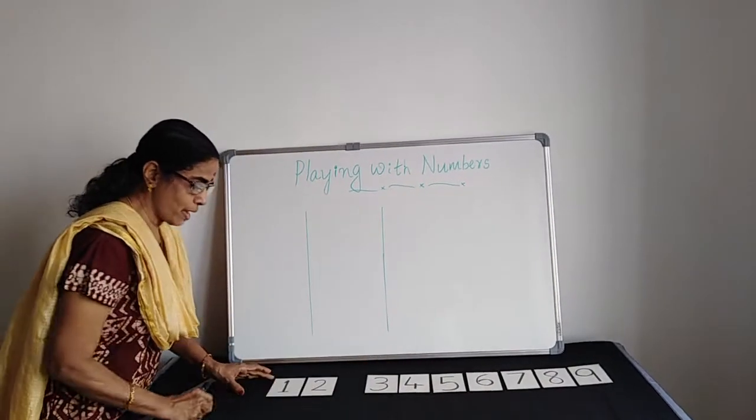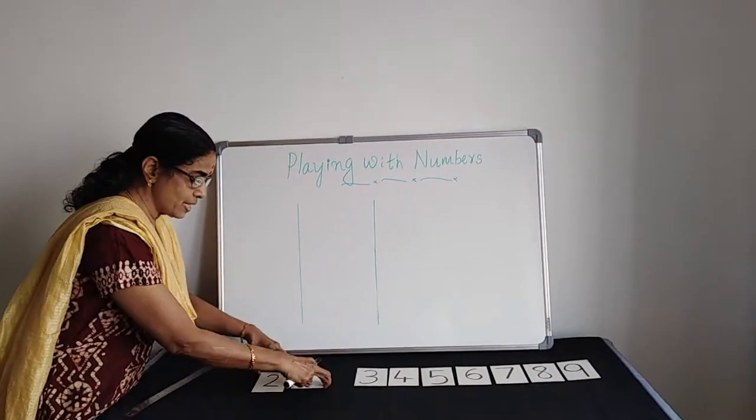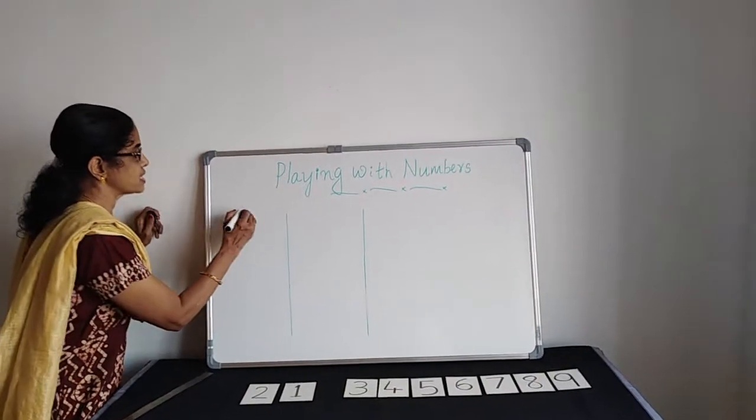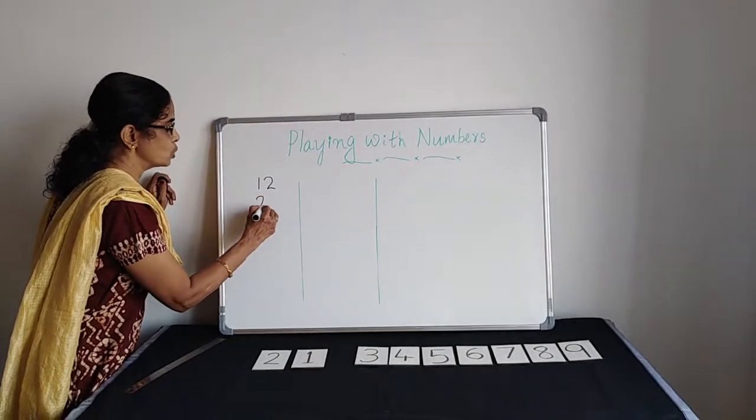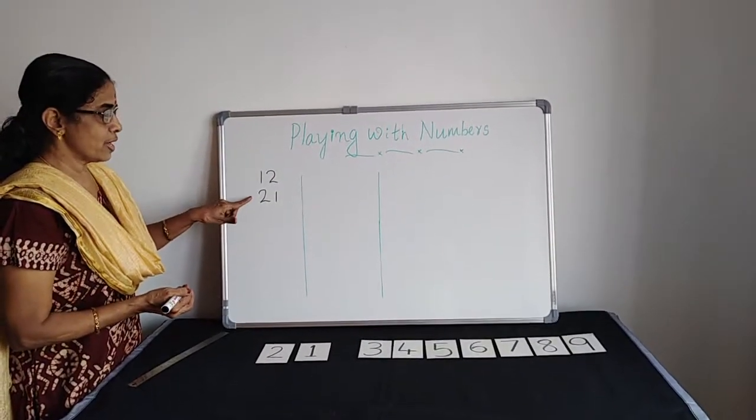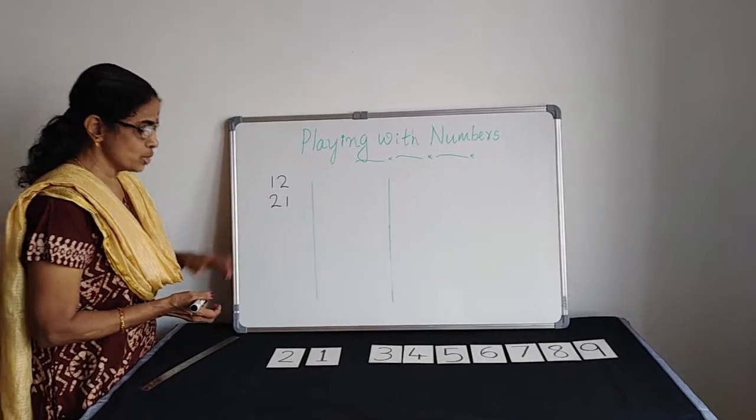So the first number, 12. Then we are going to put it like this. The number is 21. So how many numbers we are getting? 1, 2, 2, 1. That means how many numbers? Number 12, number 21. We are getting 2 numbers.